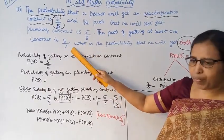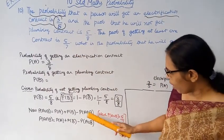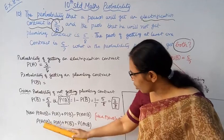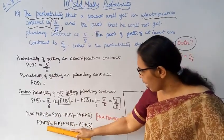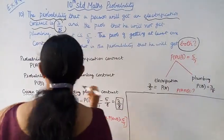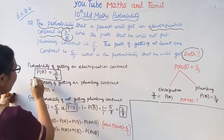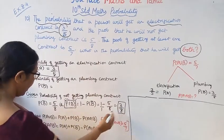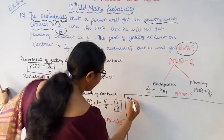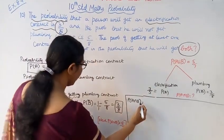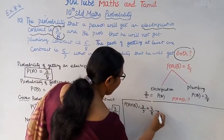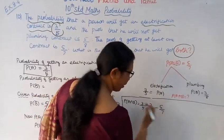Rearranging: P(A intersection B) = P(A) + P(B) - P(A union B). Substituting the values: P(A intersection B) = 3/5 + 3/8 - 5/7.